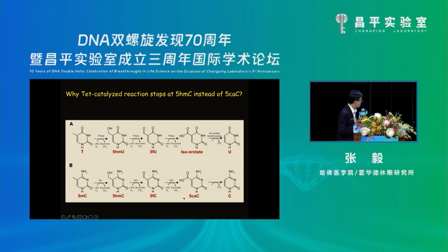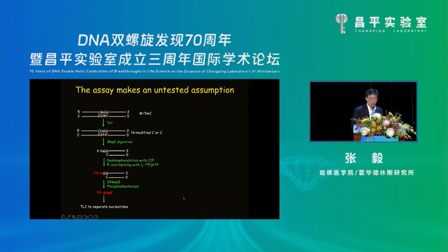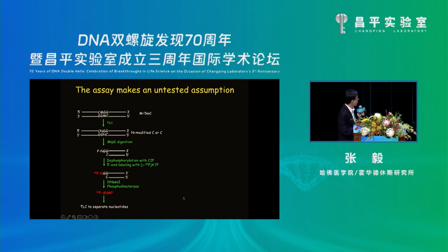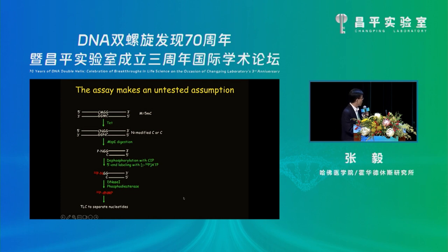However, based on our initial hypothesis, this should not stop at 5-hydroxymethylcytosine — it should generate formylcytosine and carboxylcytosine. So why did we initially not detect these? We went back to the TLC assay. We were using a CCGG sequence, a restriction site for MspI. We assumed MspI would digest CCGG regardless of whether the inner cytosine is modified. If a modification doesn't prevent MspI digestion, then the inner cytosine cannot be exposed and cannot be labeled — so we would miss it.